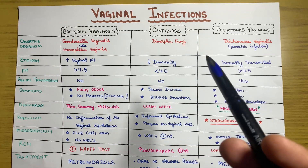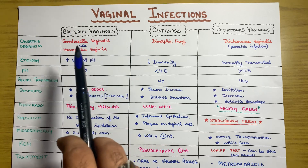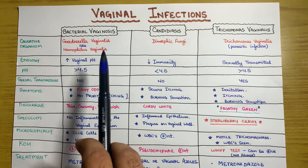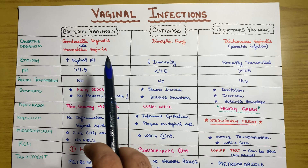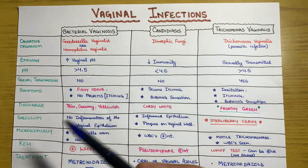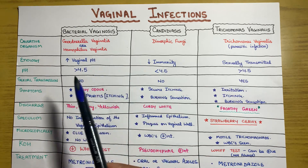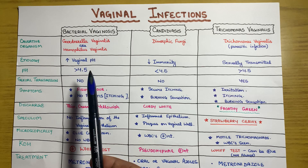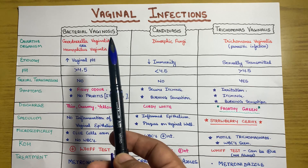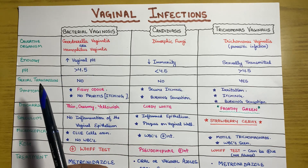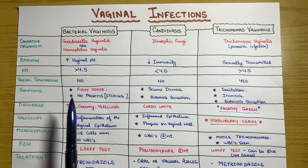The main causative organism for bacterial vaginosis is Gardnerella vaginalis, also known as Haemophilus vaginalis. This bacteria usually lives in the normal vaginal environment, but in certain conditions — for example, increased vaginal pH above 4.5 — these bacteria multiply thousandfold, leading to bacterial vaginosis. It is not sexually transmitted.